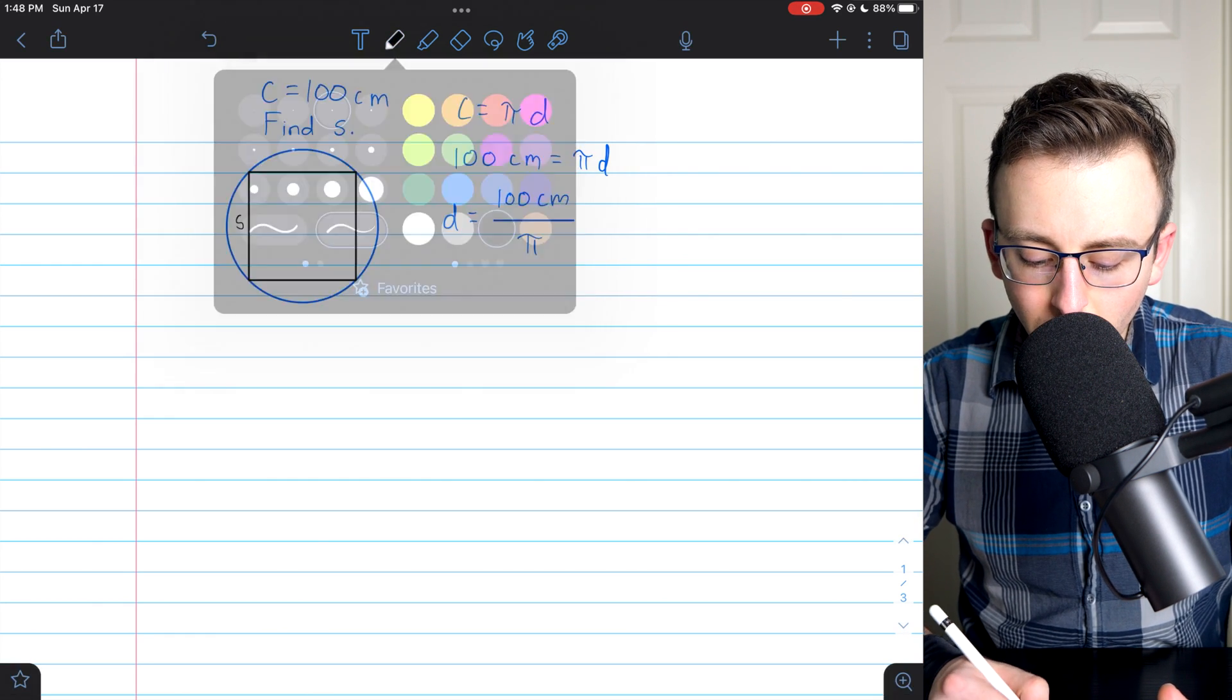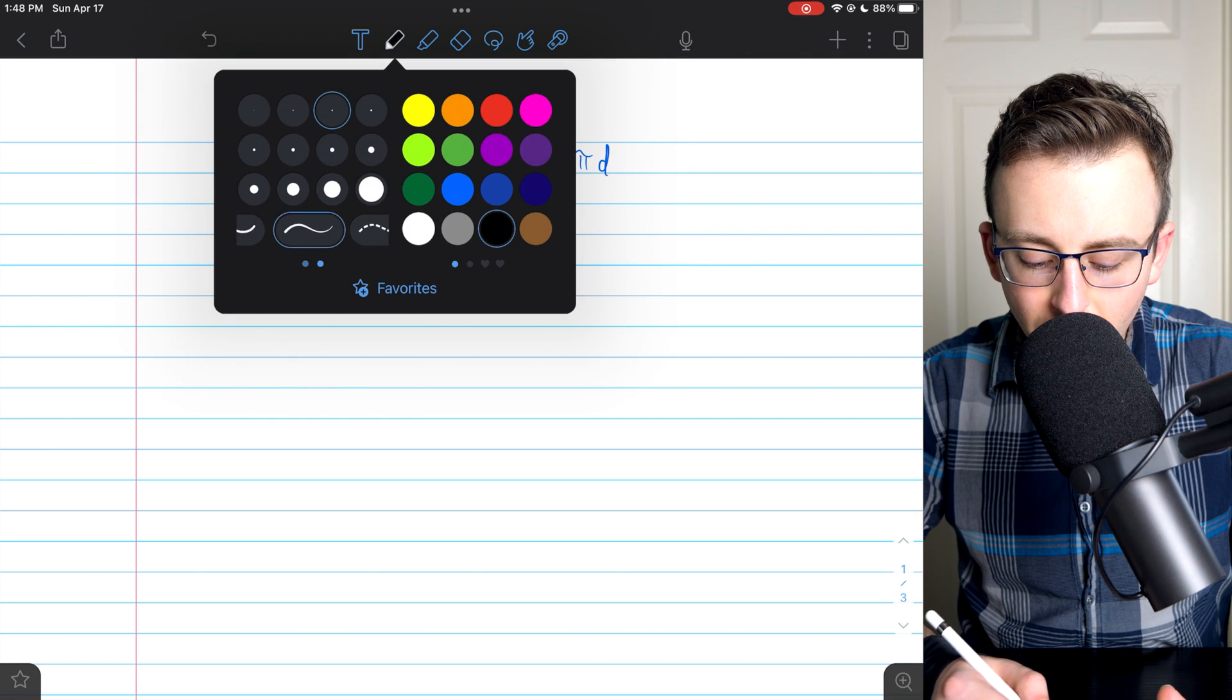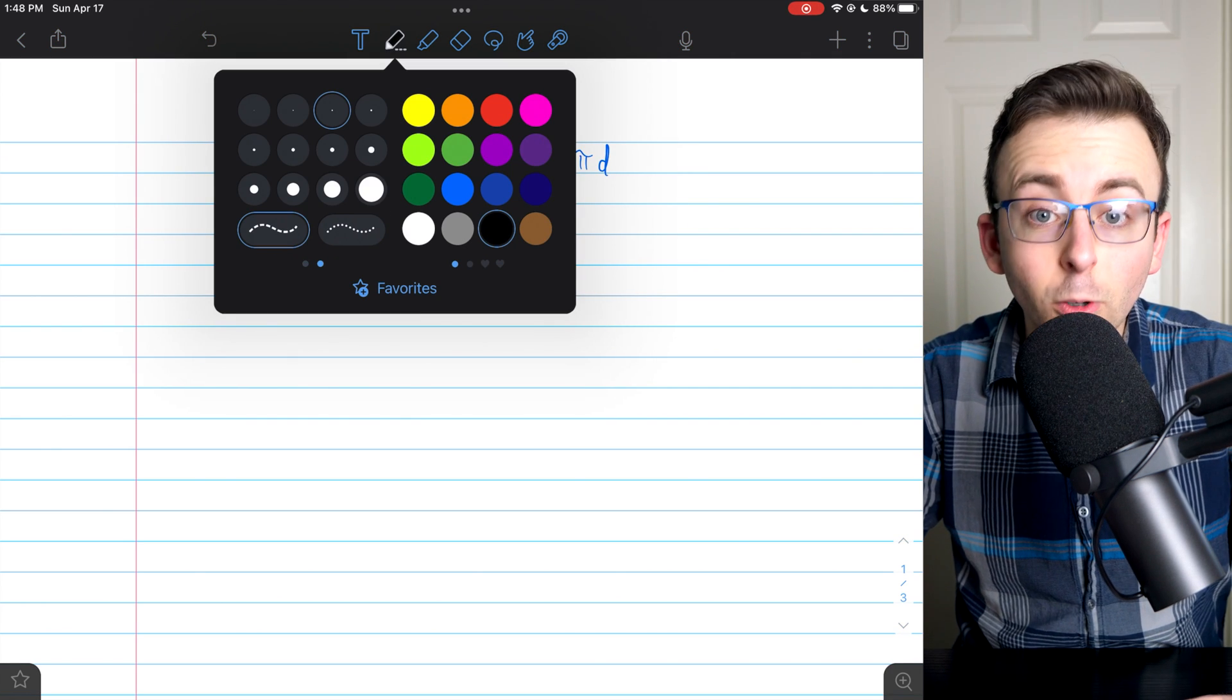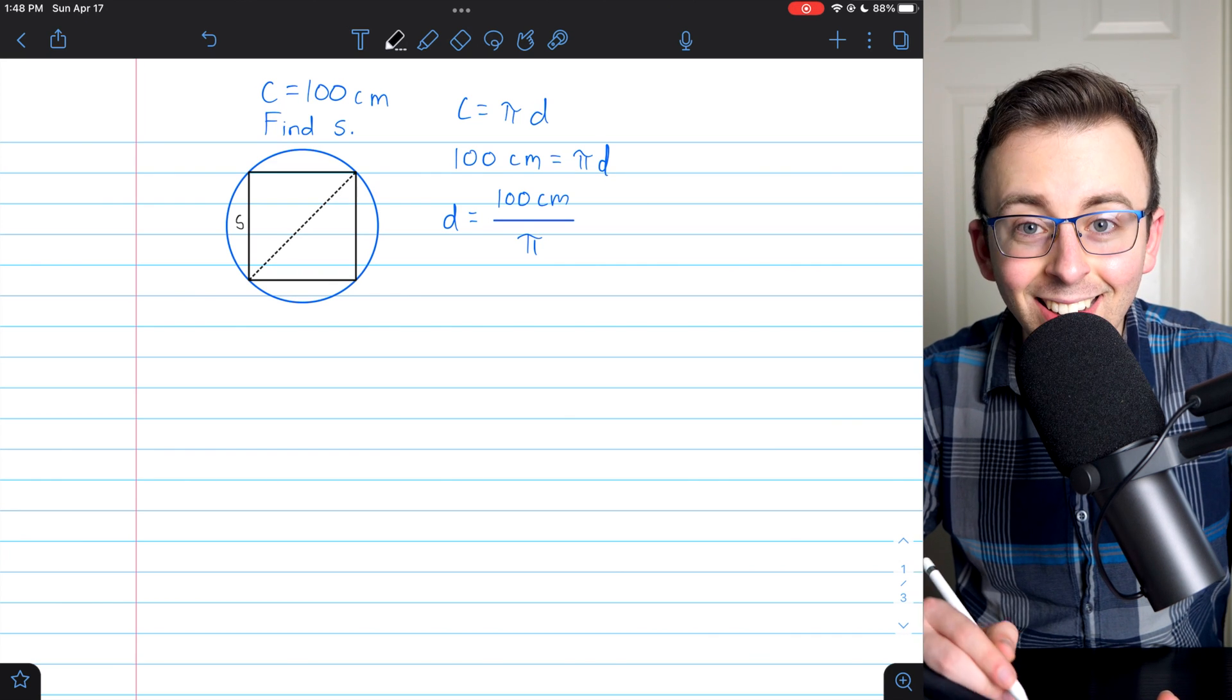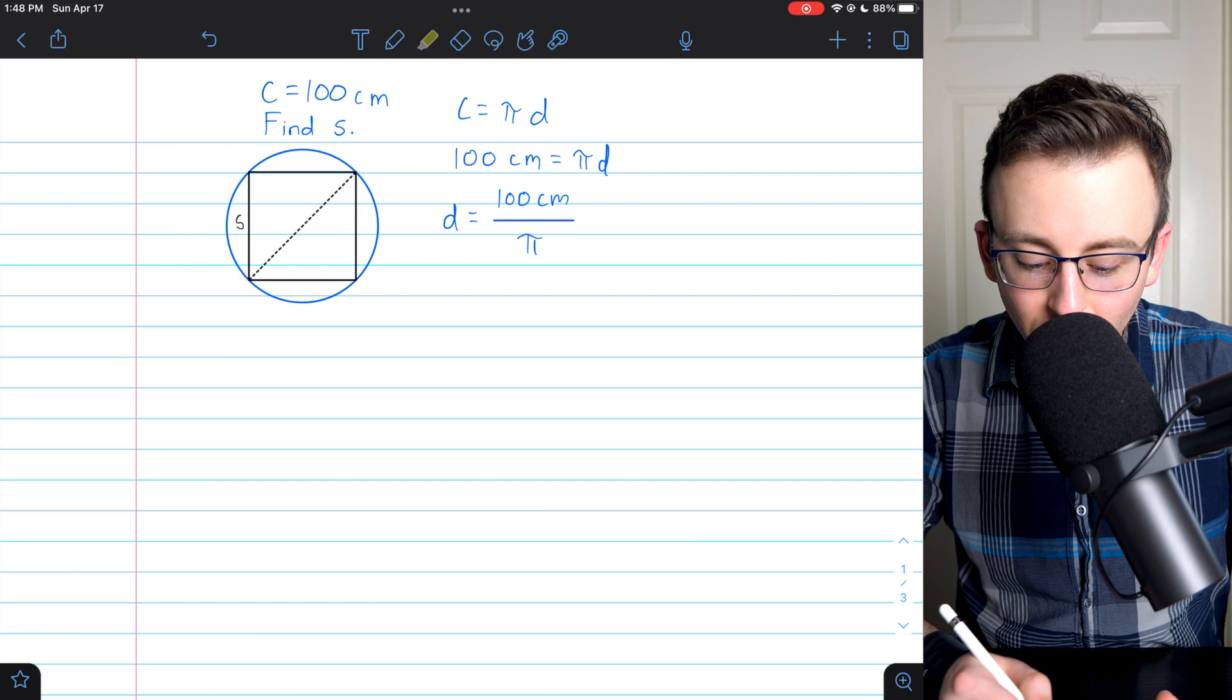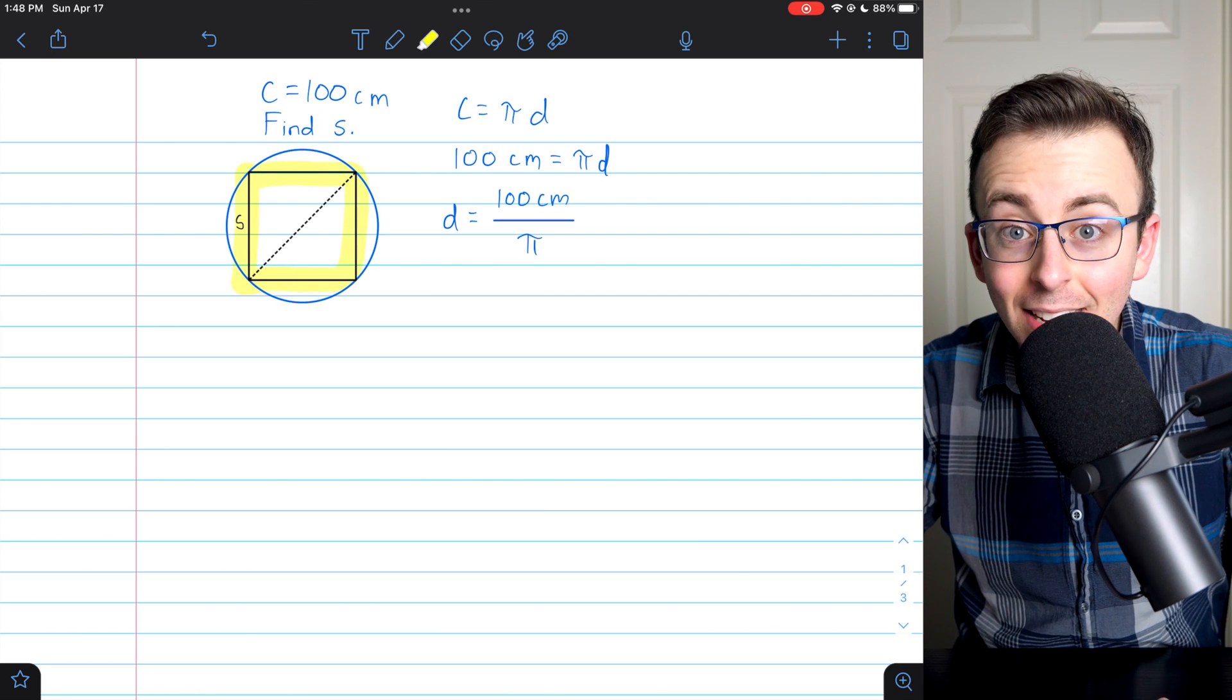Now, why is that useful in this situation? Well, the diameter is the distance across the circle. So let's draw the diameter. It looks like that. Aha! Since this square is inscribed in the circle,